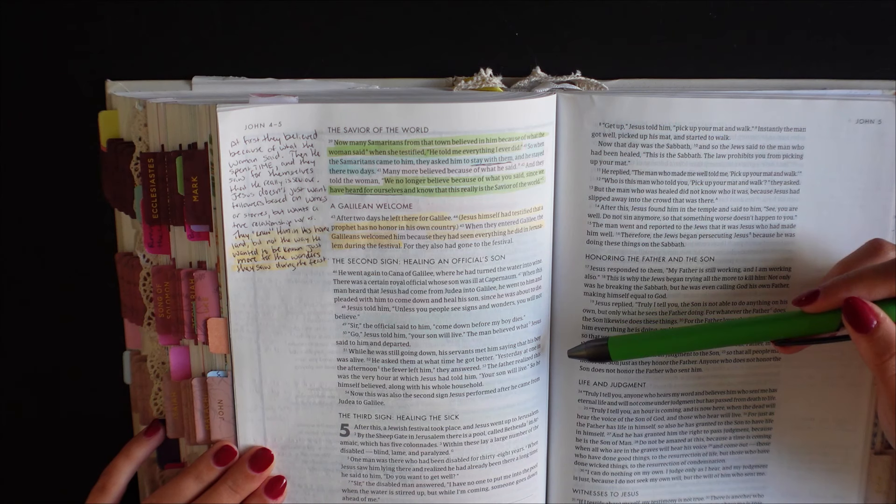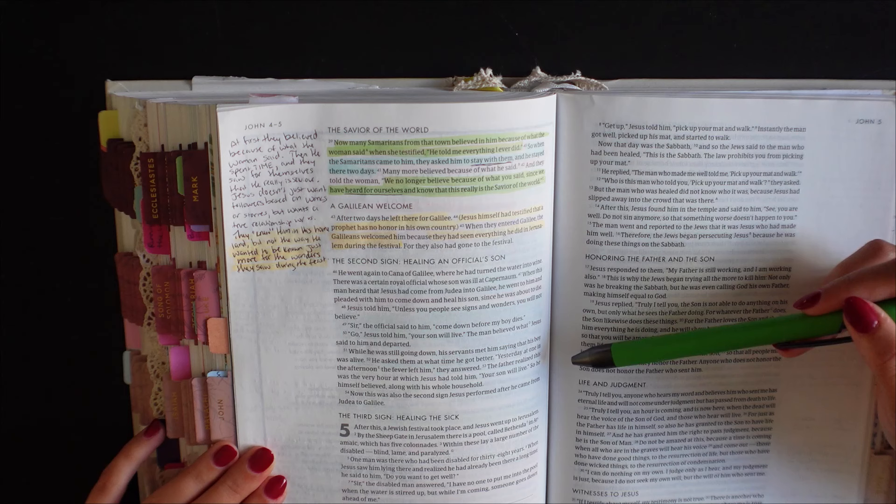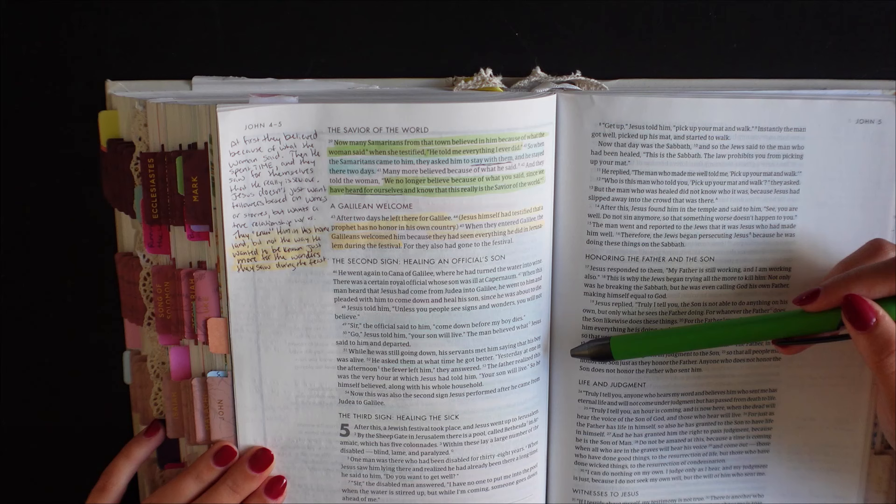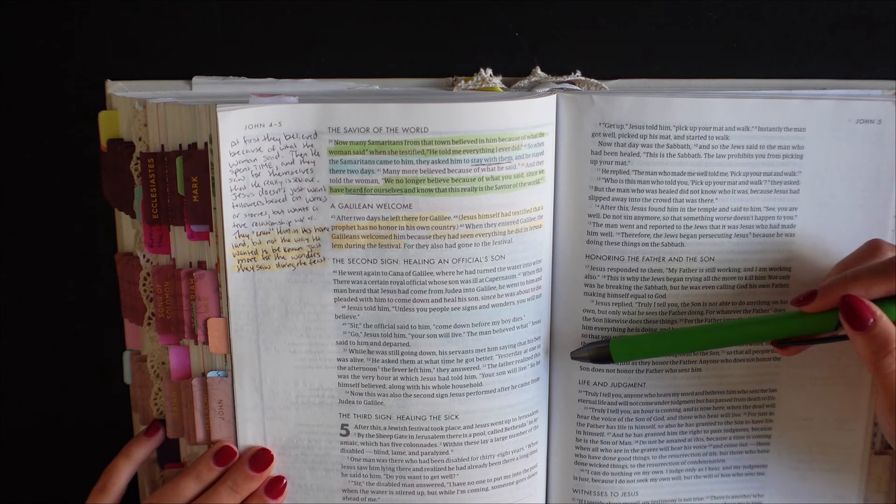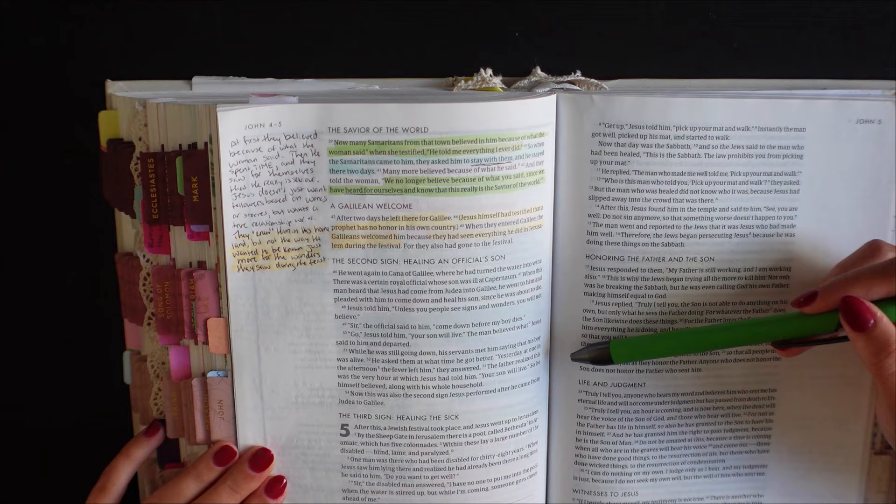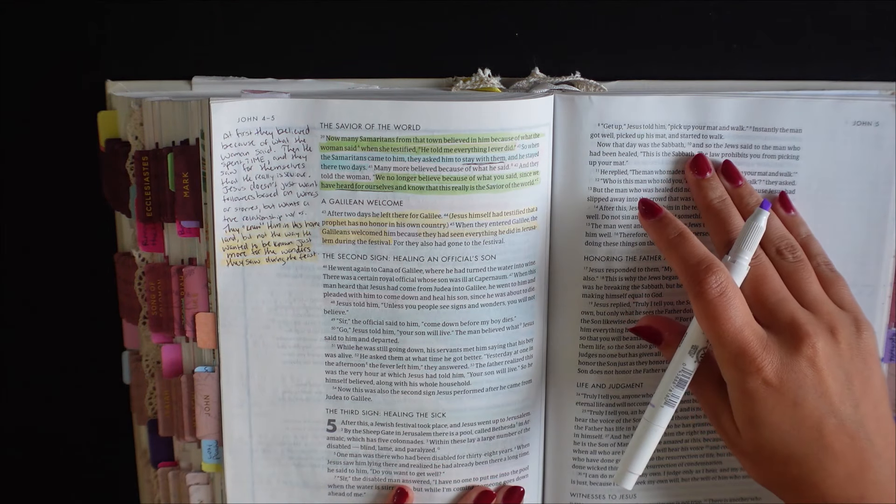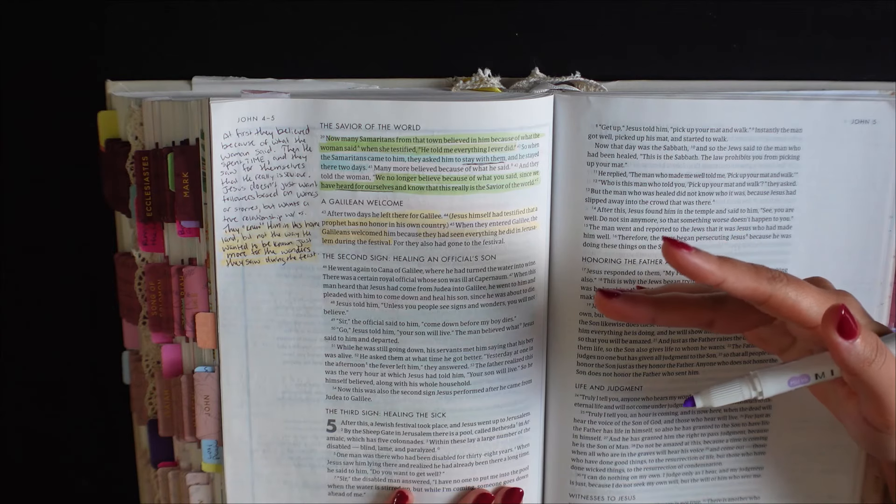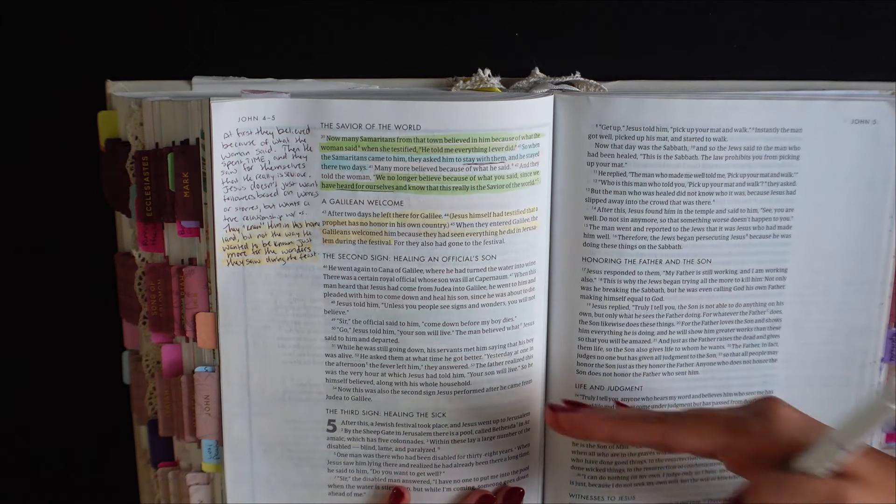While he was still going down, his servants met him, saying that his boy was alive. He asked them at what time he got better. Yesterday, at one in the afternoon, the fever left him. They answered, the father realized this was the very hour at which Jesus had told him, your son will live. So he himself believed, along with his whole household. Now this was also the second sign Jesus performed after he came from Judea to Galilee. And so here to start, all I'm going to do is I'm going to highlight what the official said and the situation and then what Jesus says.